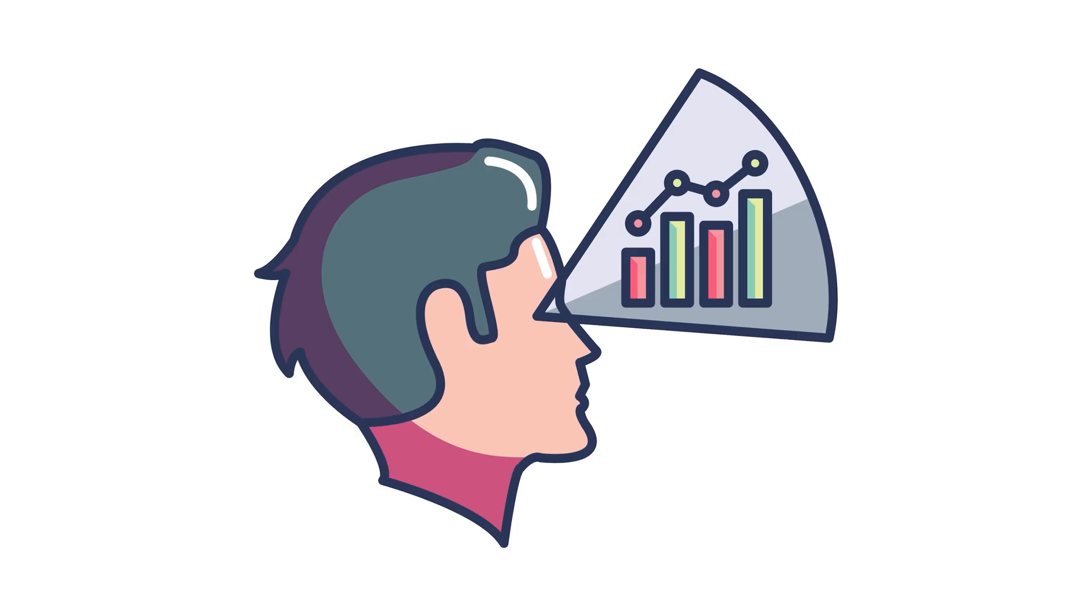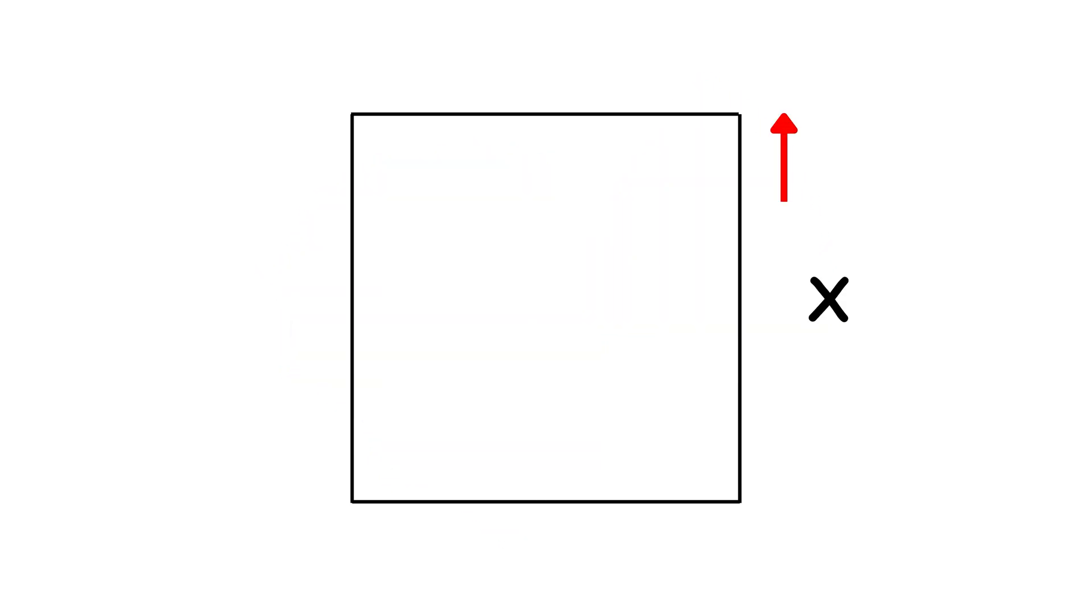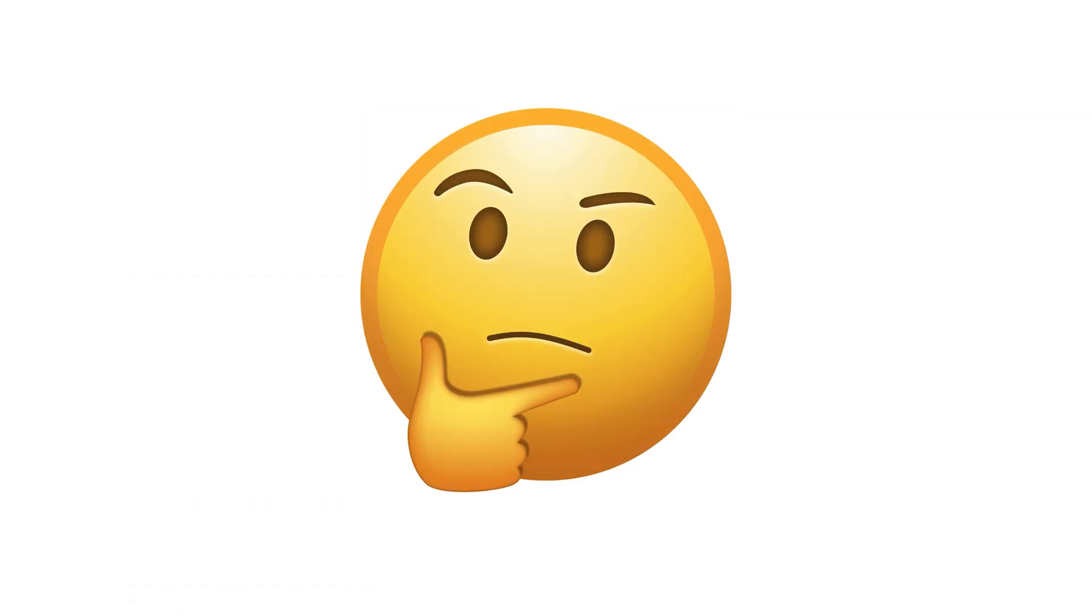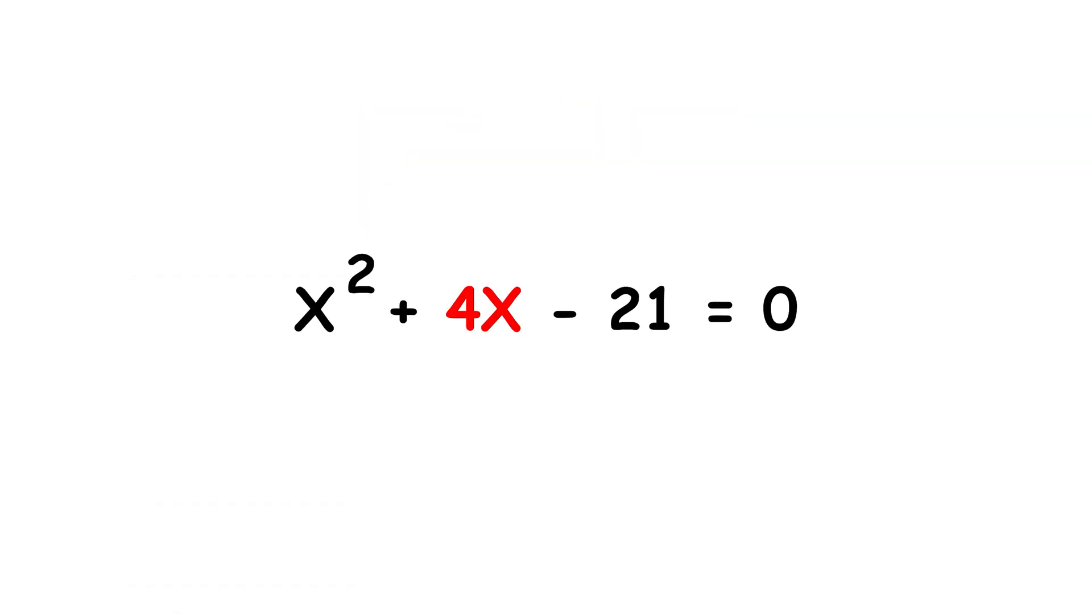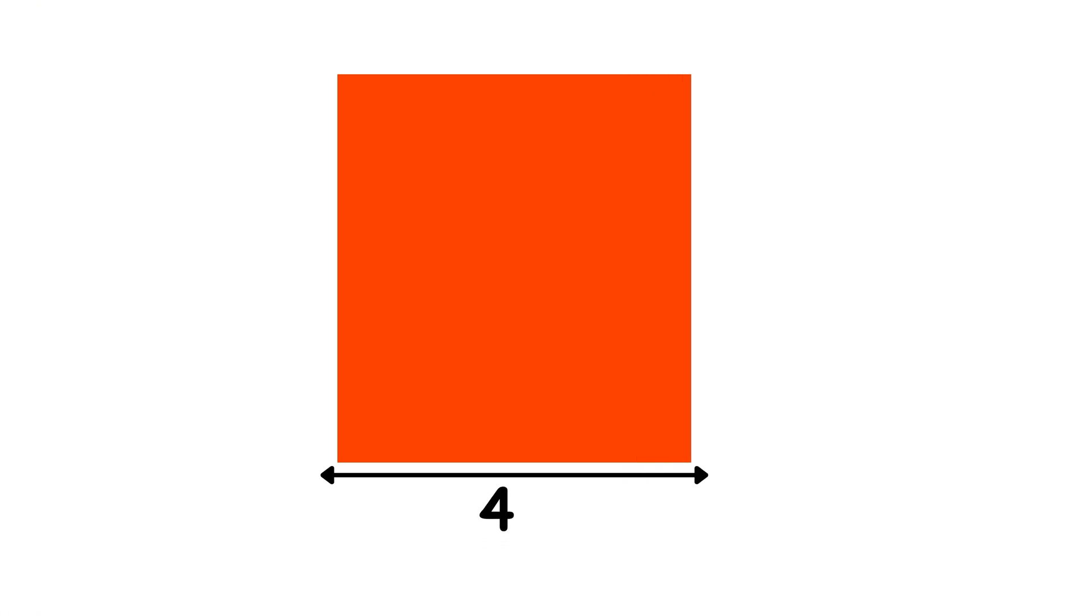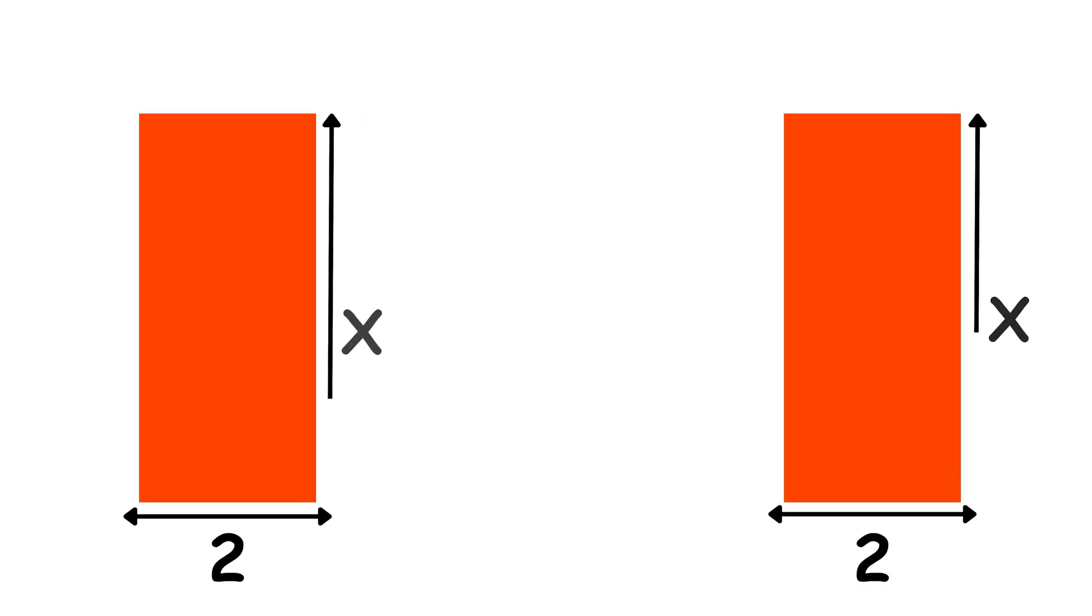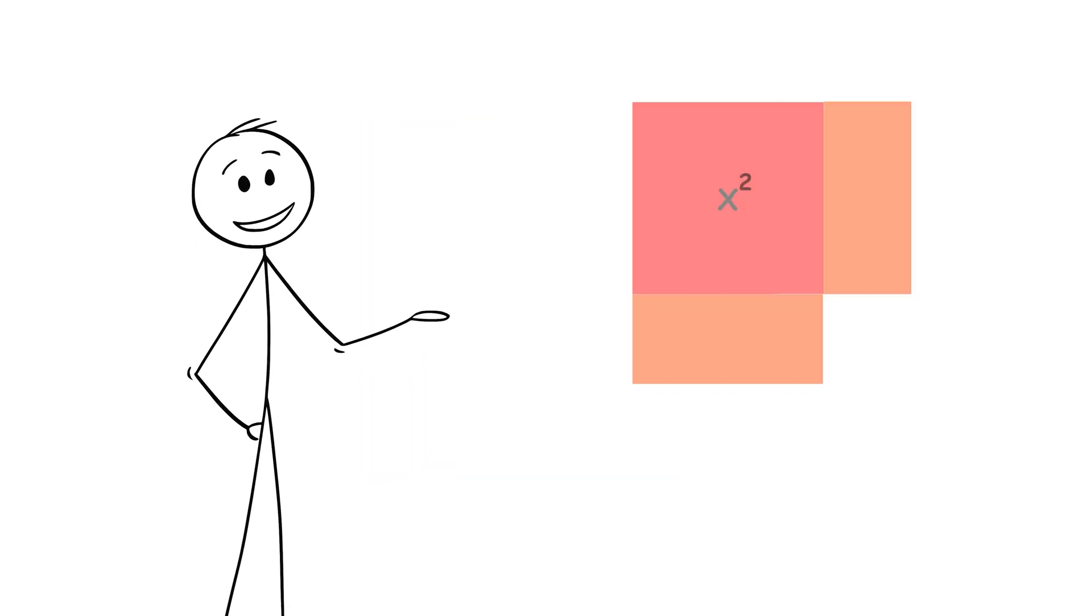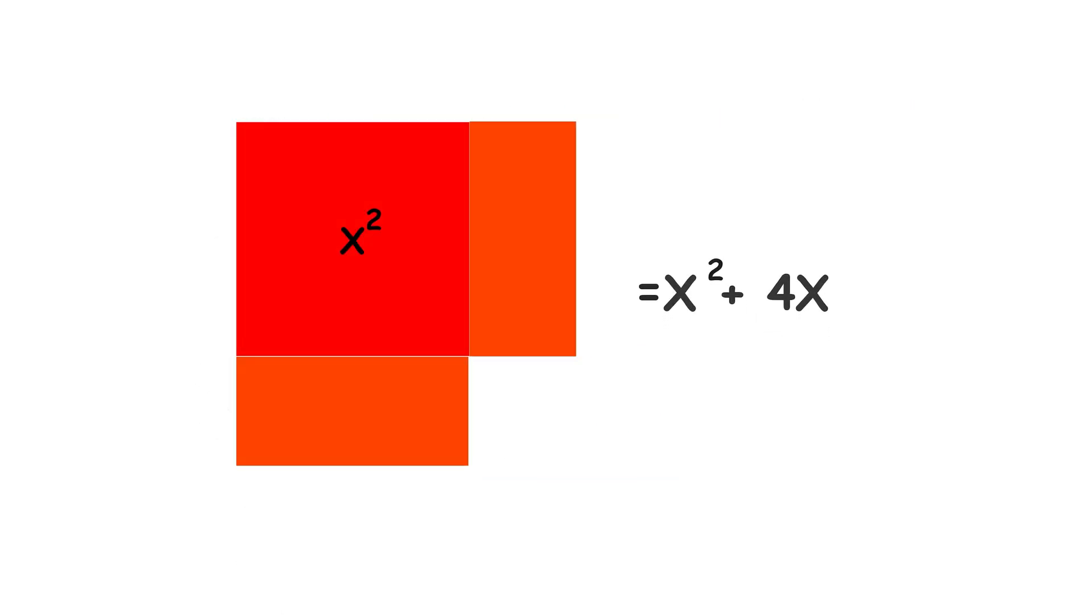Now, let's try to visualize this situation again. We can draw a square with a side length of x and an area of x squared, just like before. But now we also have the term 4x to deal with. Let's draw a rectangle with a width of 4 and a height of x. Then, we can cut the rectangle into two identical rectangles, each with a width of 2 and a height of x. We can glue one of these rectangles to the right of the square representing x squared. Then, we can rotate the other one by a quarter turn, and we can glue it to the bottom of the square.